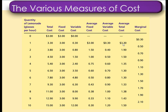The second method for calculating average total cost is adding average fixed cost and average variable cost together. For example: 3 plus 0.30 gives us 3.30; 1.50 plus 0.40 gives us 1.90; 1 plus 0.5 gives us 1.50; and so on. These are the two methods for the calculation of average total cost.